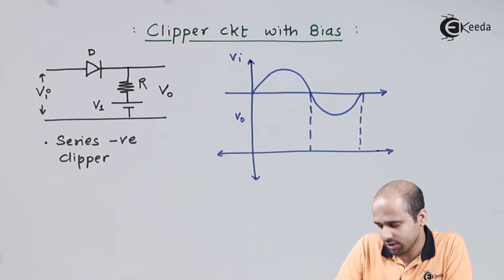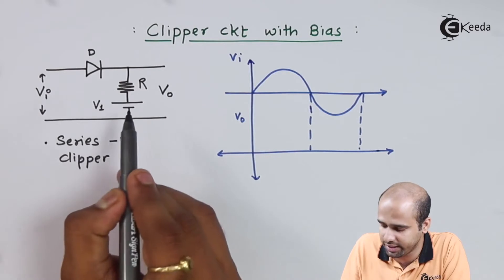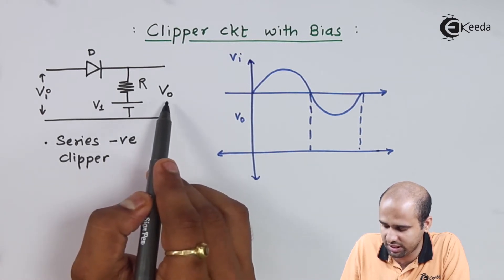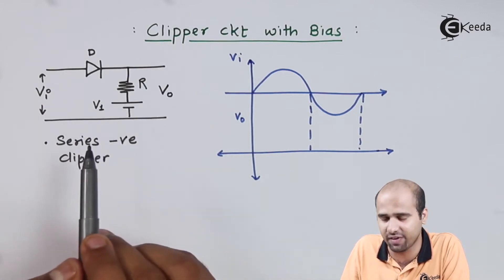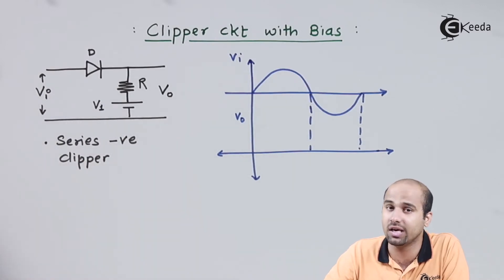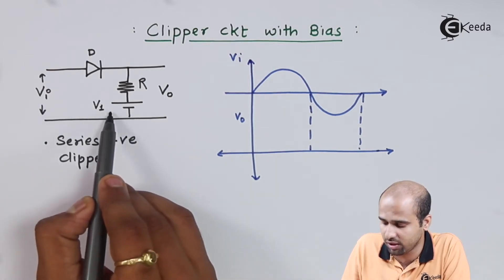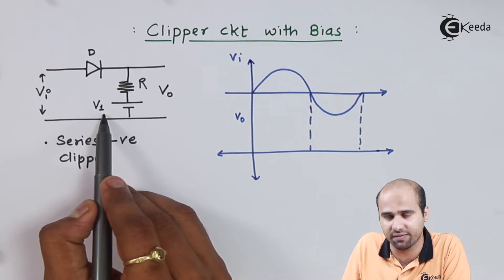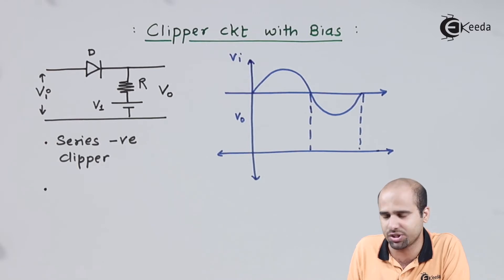Now, the only change I made is that V1, that is an external bias, a DC potential I have applied. That is nothing but V1. Without this bias, VO is equal to zero volts for the negative half cycle, because diode D is reverse biased. So if we apply this V1, then obviously V1 will reflect the change in the output voltage VO. VO will become V1 for the negative half cycle. We will understand this circuit in positive and negative half cycles — first the negative half cycle and then the positive half cycle.